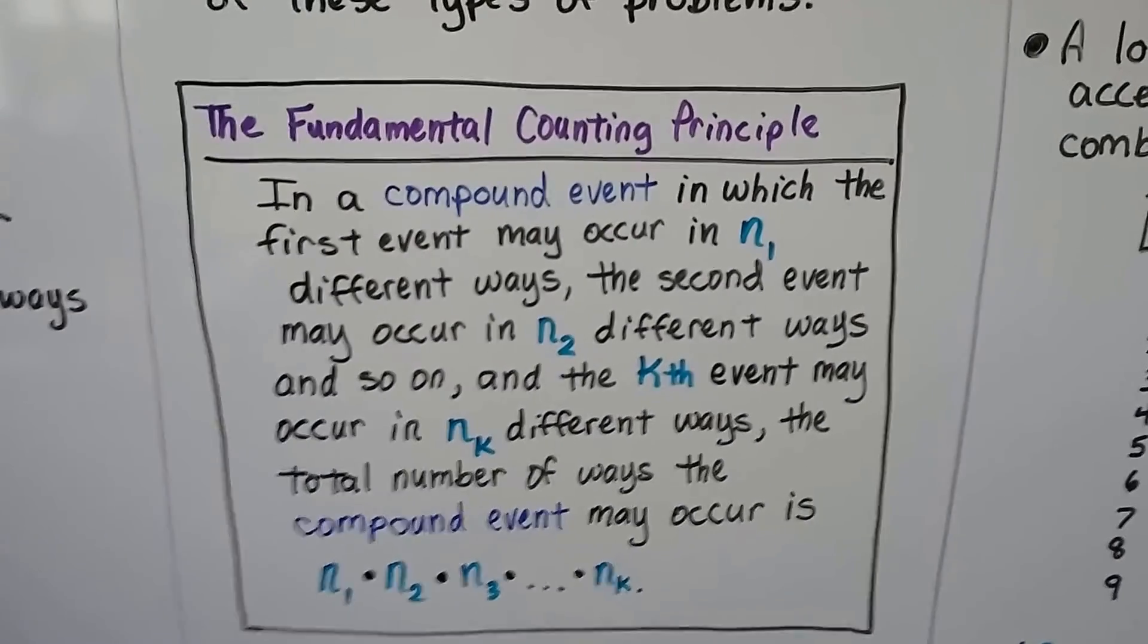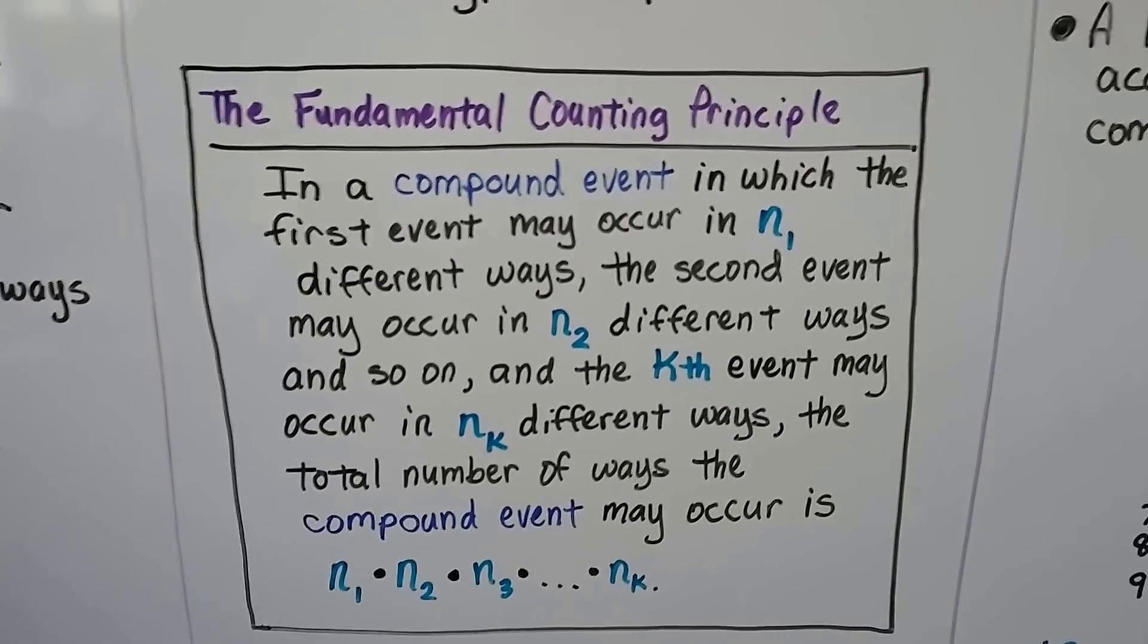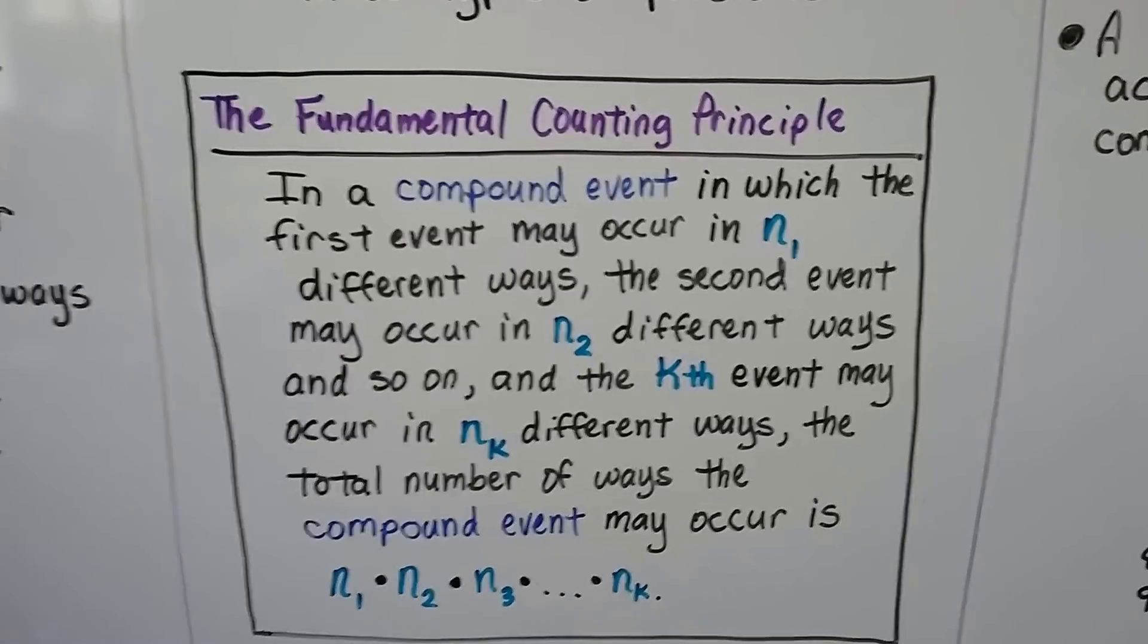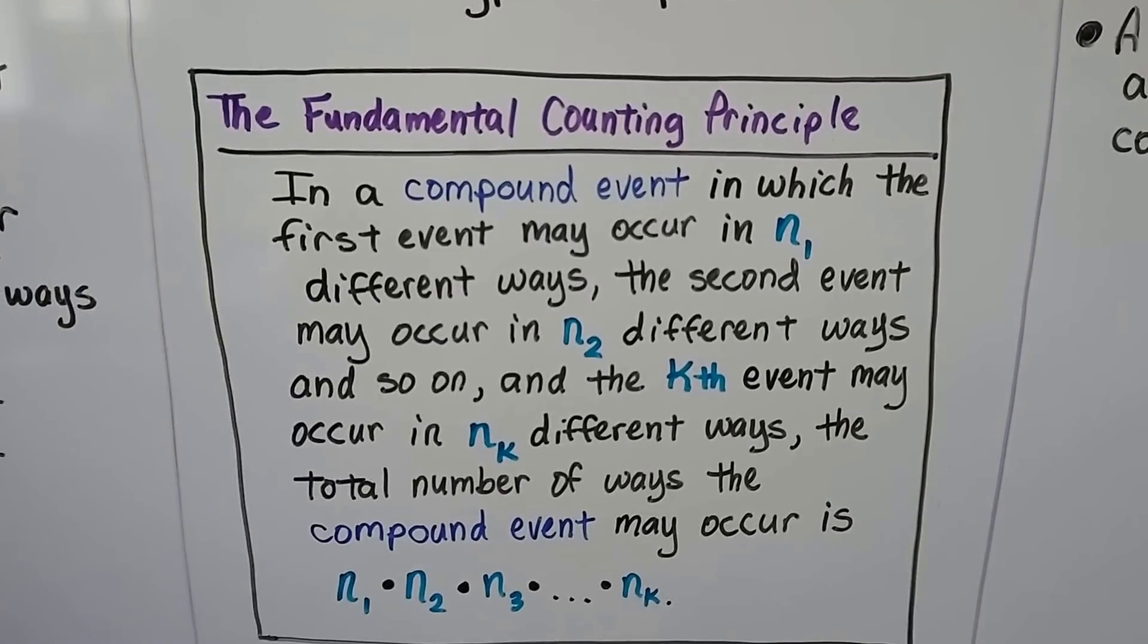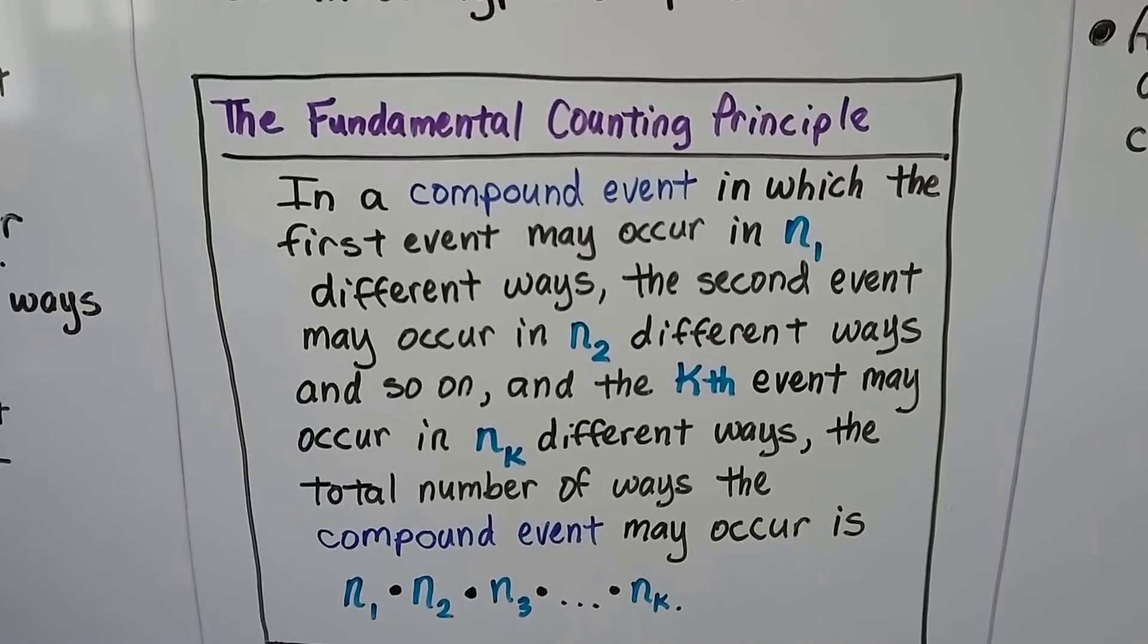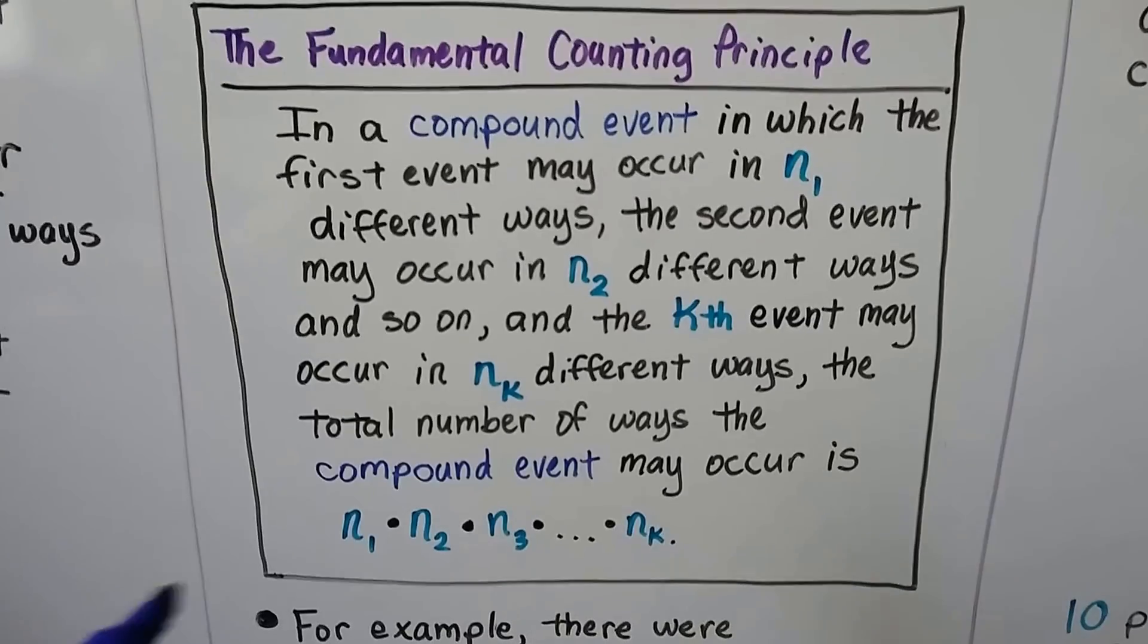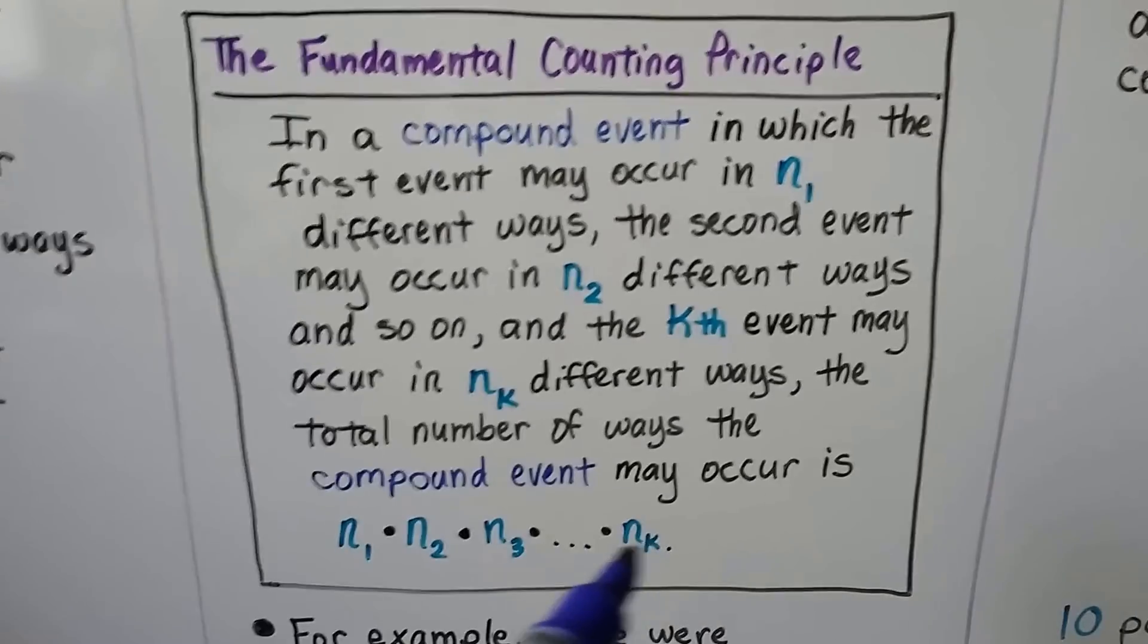This is the formal description. In a compound event in which the first event may occur in n sub 1 different ways, the second event may occur in n sub 2 different ways, and so on. And the kth event may occur in n sub k different ways. The total number of ways a compound event may occur is n sub 1 times n sub 2 times n sub 3, and so on.